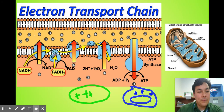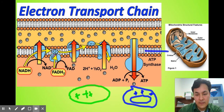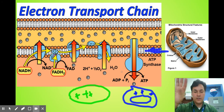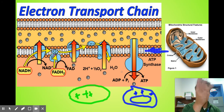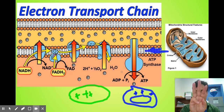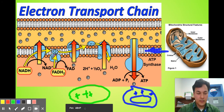All these H⁺ ions are pushed to the outside and they're going to diffuse through ATP synthase. They don't like the membrane, so they've got to diffuse through the protein. When they diffuse through ATP synthase — you'll see the video we watch in class — it turns like a motor, just like in photosynthesis. When it turns, it jams the third phosphate onto ADP to make ATP.